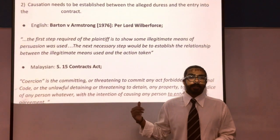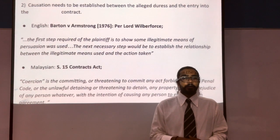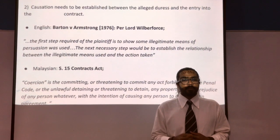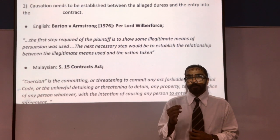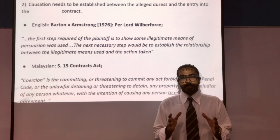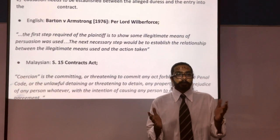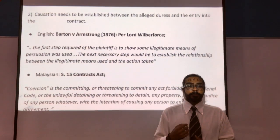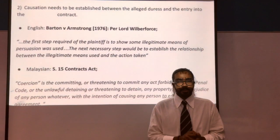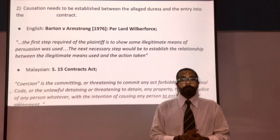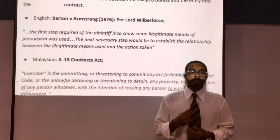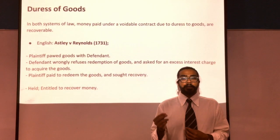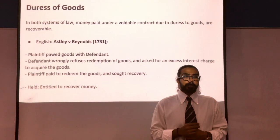In Barton v Armstrong, the claimant had to establish the causal link between the threat to his life and his entry into the contract. Lord Diplock stated that the victim not only had to show the illegitimate means of persuasion, but subsequently needed to establish a relationship between the illegitimate means used and the action taken. This same point is reflected in the Contracts Act 1950 Section 15, where coercion requires the act of threat to cause an action in entering into the contract to be classified as duress.